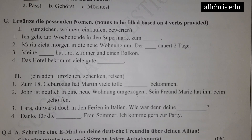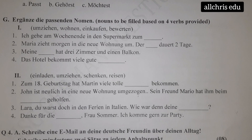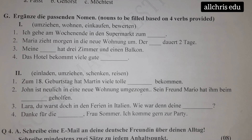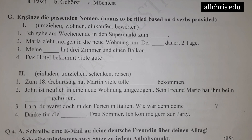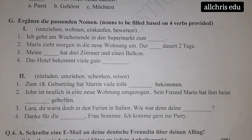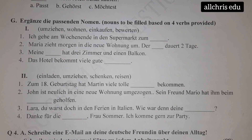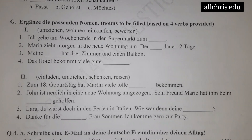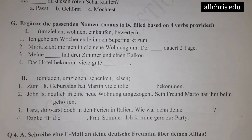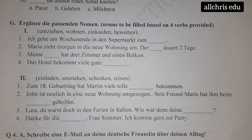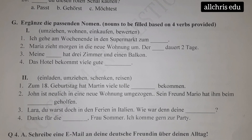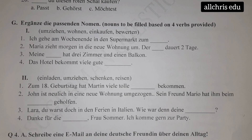Hello students. As you can see over here, we have reached a part where we are supposed to write 'Ergänze die passenden Nomen,' which means you are supposed to write in the blanks the noun forms of the given verbs in the bracket.